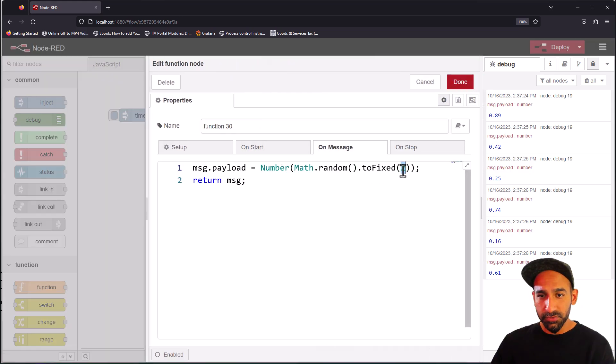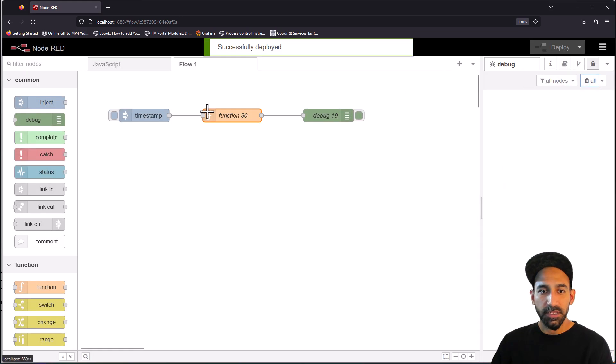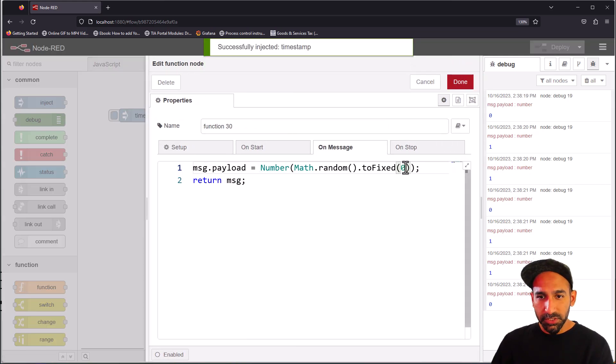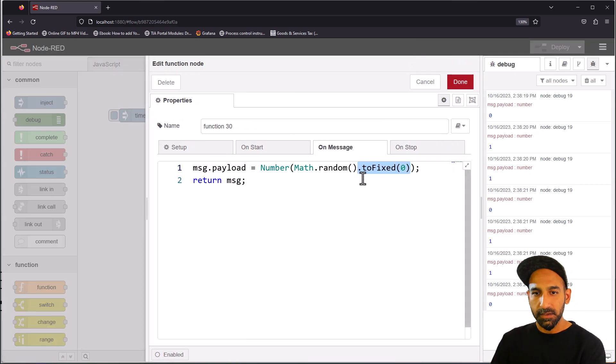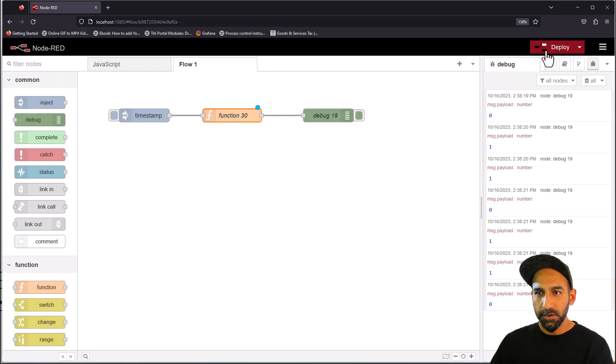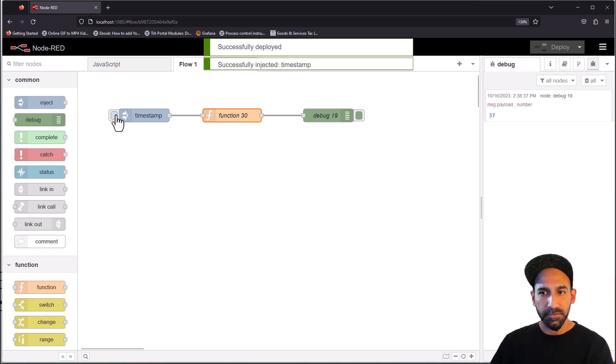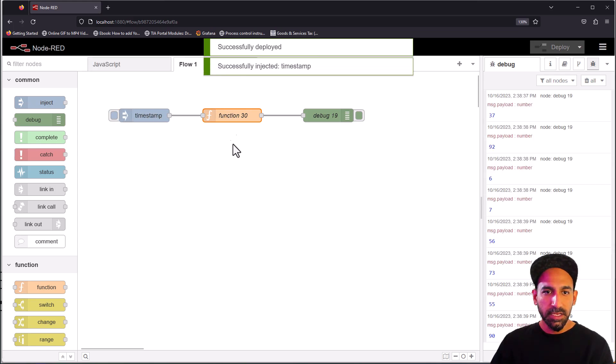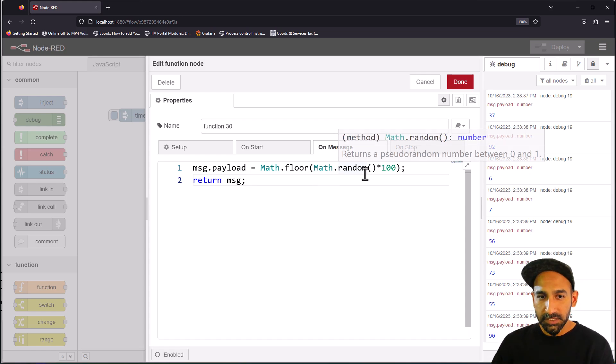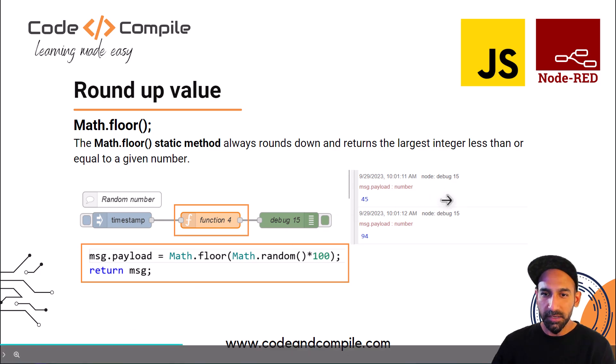It returns the largest integer less than or equivalent to a given number. You can also use this function to round up your values. Furthermore, you can also do round up by using zero in toFixed, which will do the same because then you have no decimal points at all. Or you can take Math.random multiply by one hundred and write Math.floor. This will also work and give you a number between zero to one hundred rounded up.